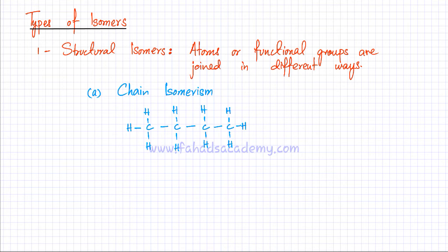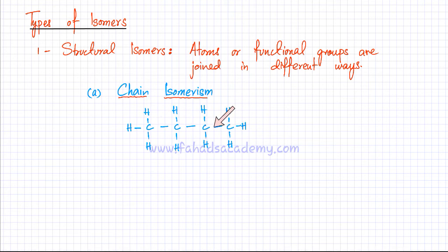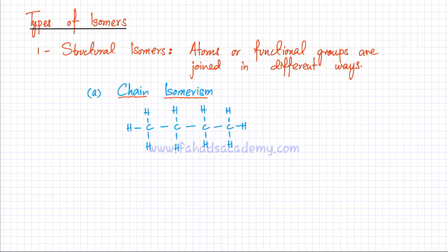The first type of structural isomers is called chain isomers. Looking at this example — this one is butane. You can see there's a carbon chain going through it. If you're going to make an isomer of this, you're going to create another molecule where the carbon arrangement is different. You're going to rearrange that carbon chain differently.